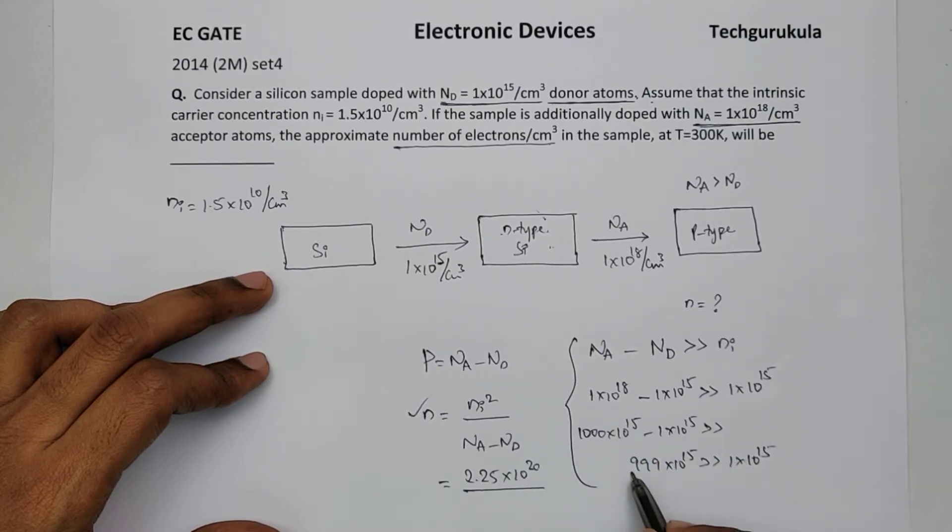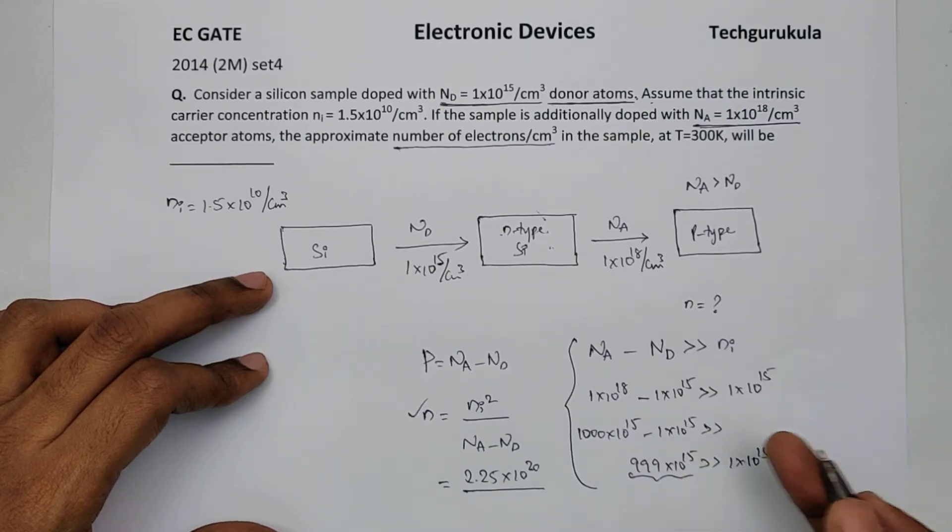I can say Na minus Nd is 999 times 10 power 15, which I am taking approximately as 1000 times 10 power 15, which is 1 times 10 power 18 anyways. So 1 times 10 power 18.